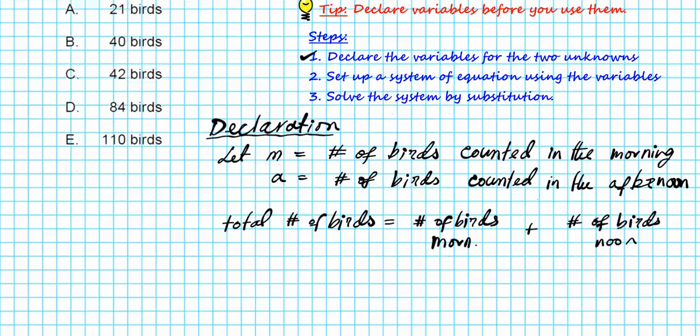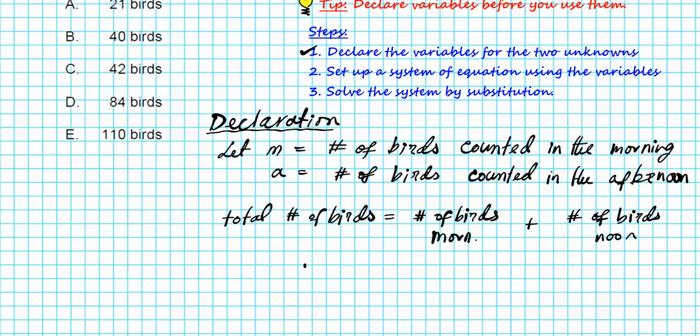We know that the total number of birds is 76 and the total number of birds in the morning we are going to represent it by M based on our declaration here. So this is equation number one.